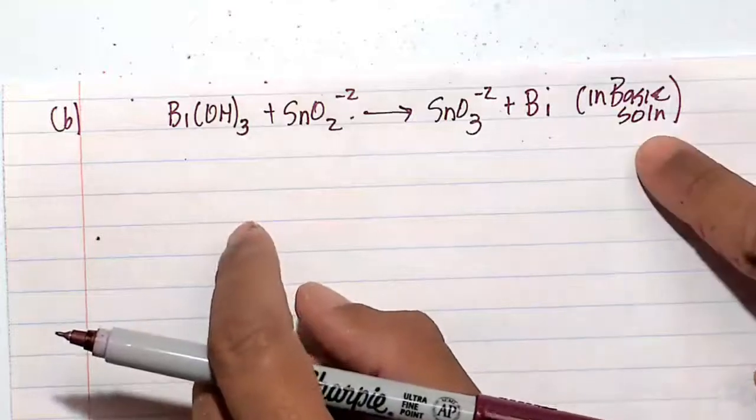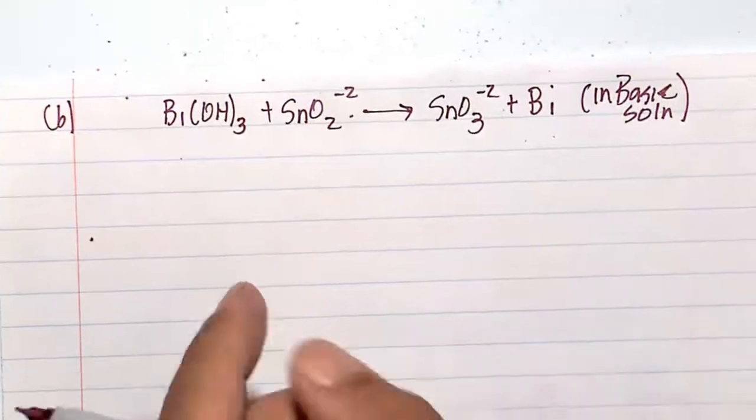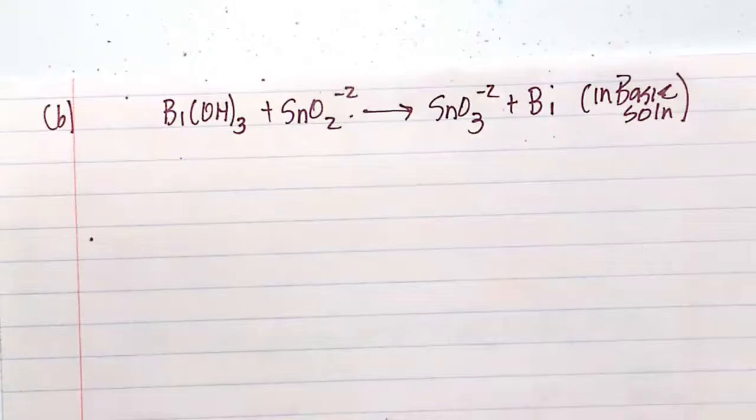This time we're doing it in basic solutions. So once again, we have plentiful amounts of OH minuses and plentiful amounts of water.